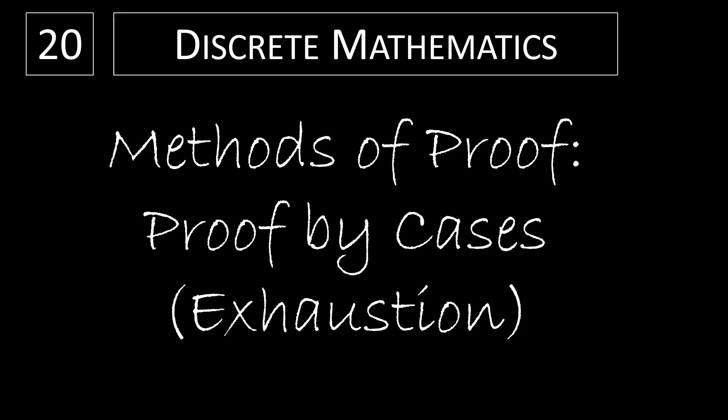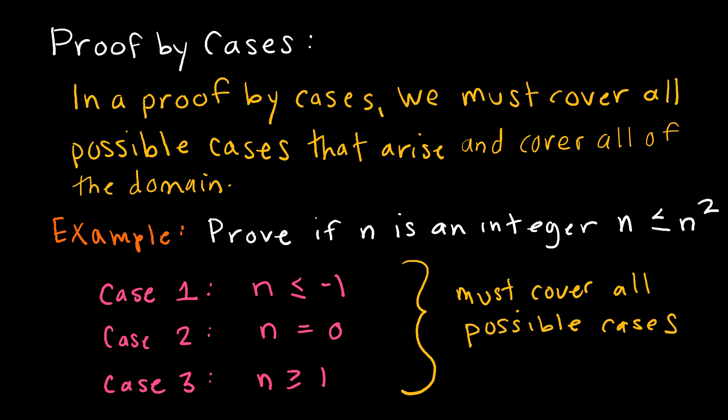In this video, we're going to take a look at one last method of proof, which is a proof by cases or proof by exhaustion. When we do a proof by cases, essentially what we're trying to think through is all of the different ways in which a situation could happen. For instance, I'm going to prove: if n is an integer, then n is less than or equal to n squared. So here's an implication — if P, then Q. Hopefully at this point in your mathematics study, you have determined that negative values sometimes react differently in a function than positive values, and 0 often acts differently than anything else. So that is what I chose to use for my cases.